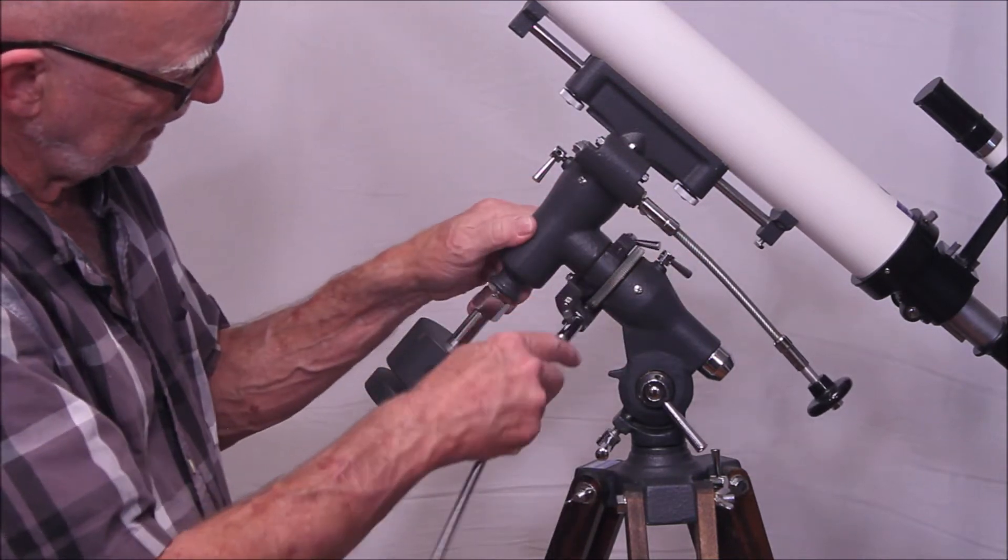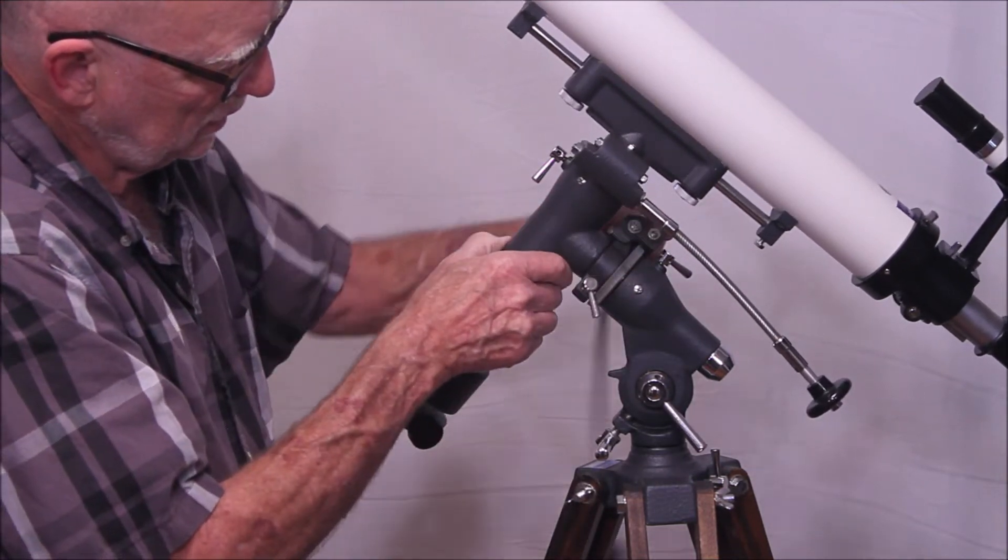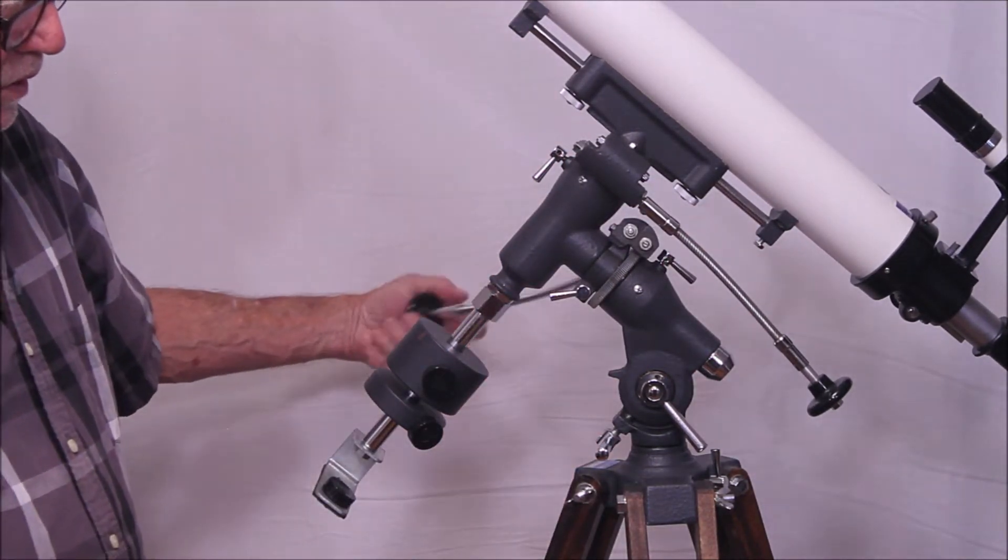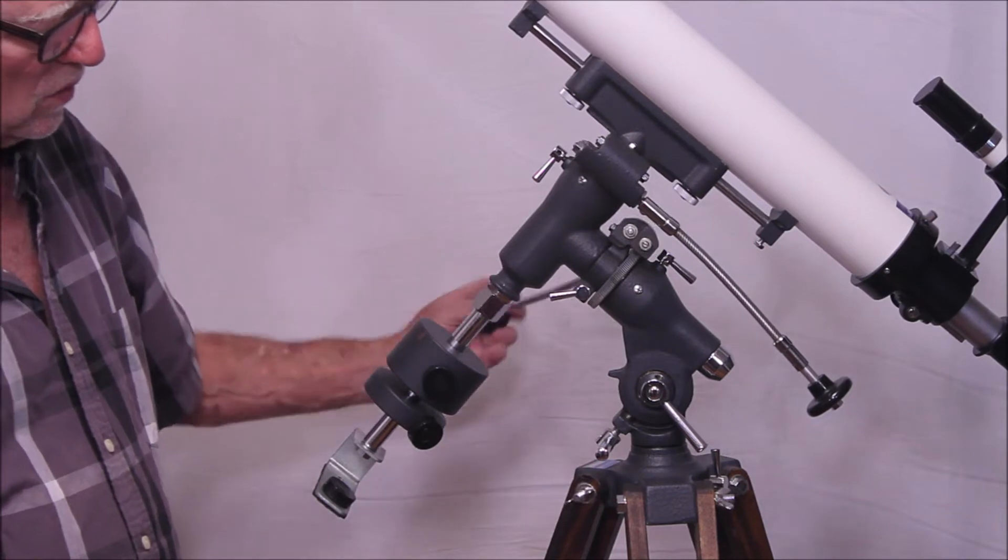There's another one back here. Then you rotate the whole thing like that, lock them back down, and now your remote control is on the other side.